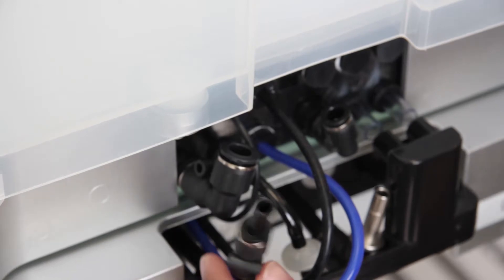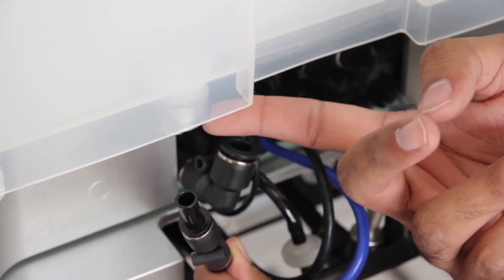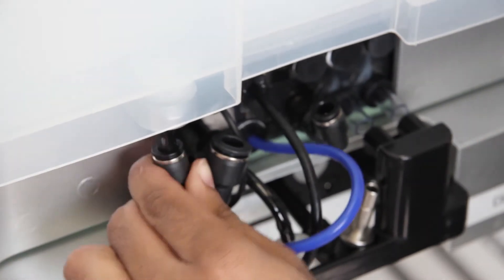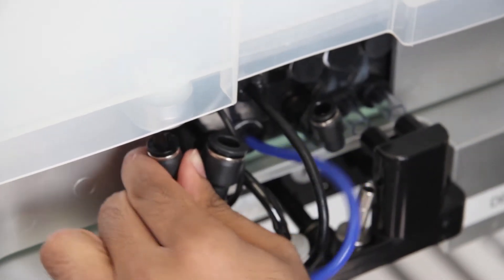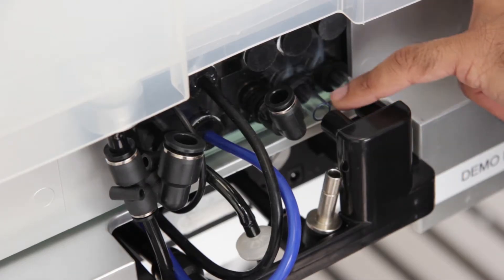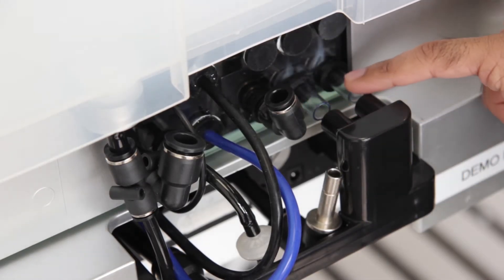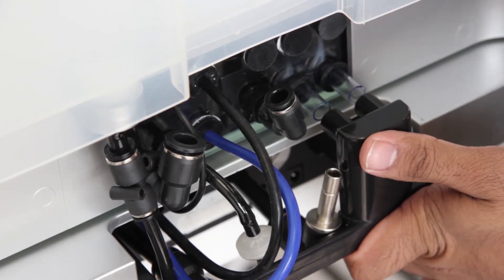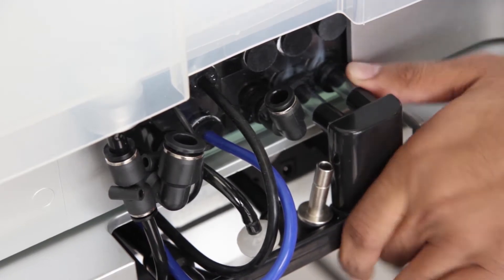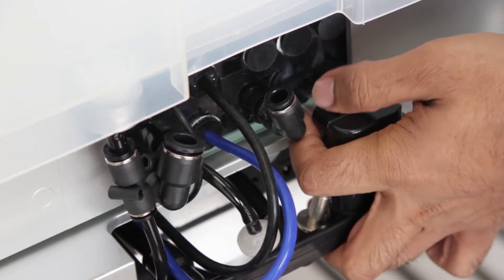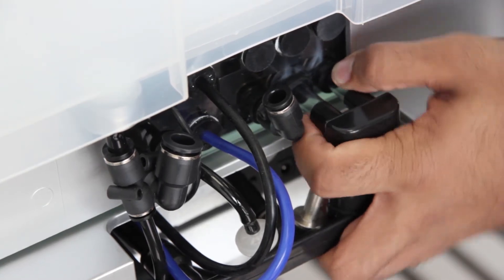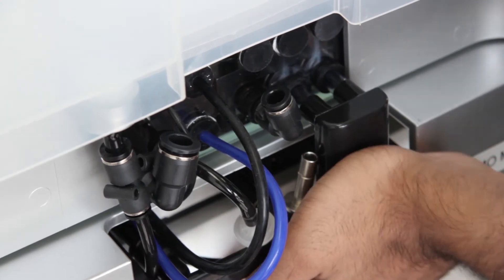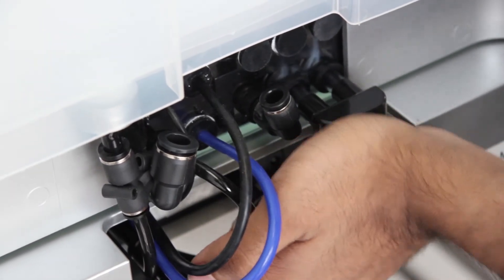Now we must reinsert the reservoir intake into the reservoir cup right over here. Next, we must reconnect these two clear tubes back into the manifold of the fan. Push the box slightly and get the two tubes lined up with the manifold. Once the tubes are lined up with the manifold, you can simply push the box all the way like that.